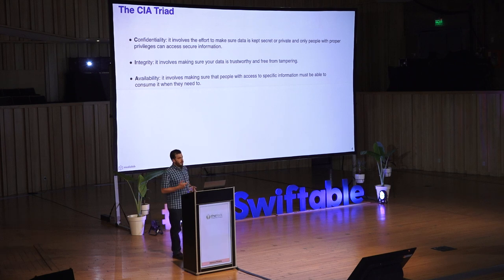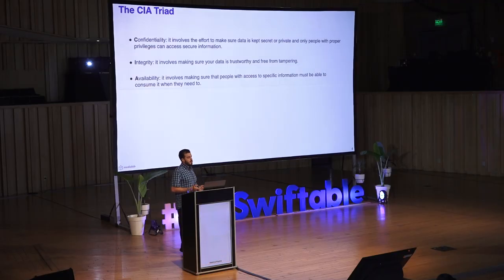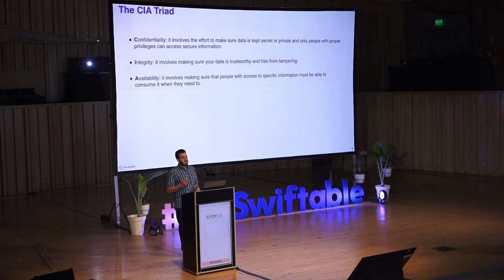The first concept I will talk about is the CIA triad. It's a common model that forms the basis of development of security systems. It's an acronym for confidentiality, integrity, and availability. Confidentiality involves making sure that data is kept secret and private, and only people with proper privileges can access secure information. Integrity involves making sure your data is trustworthy and free from tampering. Availability involves making sure that people with access to specific information must be able to consume it when they need to. In this talk, we will talk mostly about the first two.